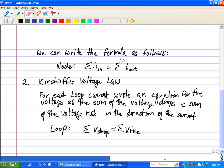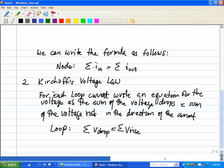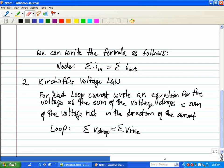Kirchhoff's Voltage Law is like a conservation of energy. It says for each loop current, we write an equation for the voltage as the sum of the voltage drops is equal to the sum of the voltage rises in the direction of the current. For each loop, the summation of the voltage drops equals the sum of the voltage rise.